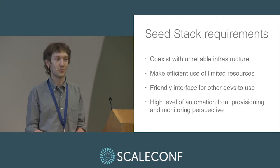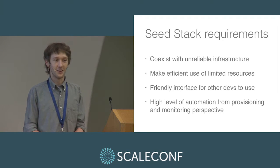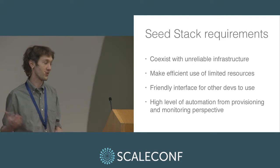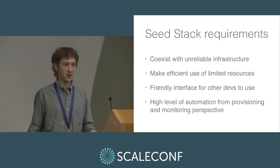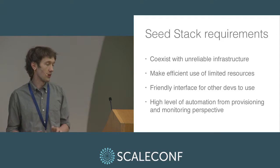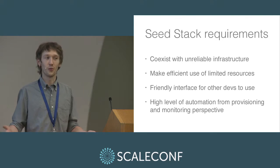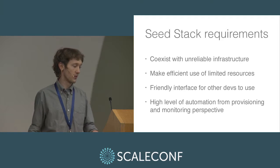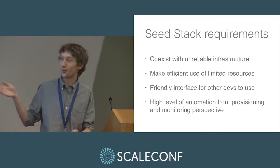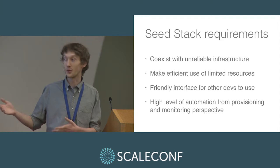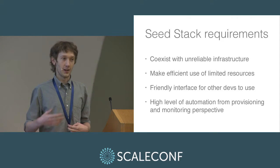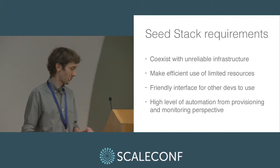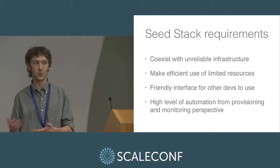It has some interesting requirements. We have to coexist with unreliable infrastructure — deploying in places like Nigeria and Uganda where maybe there isn't reliable electricity or connectivity. We need to make very efficient use of limited resources; we don't have cloud, so we can't just spin up new instances and we need to be very careful with how much we use. We want to be friendly to whoever we hand it over to, and we want a really high level of automation so we don't have to worry too much about this thing once we've put it in place — and we also want to be able to put it in place pretty quickly.